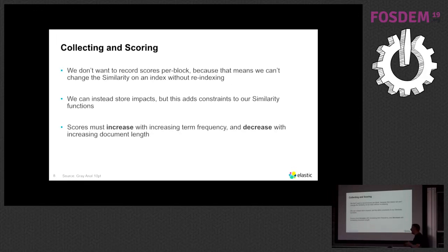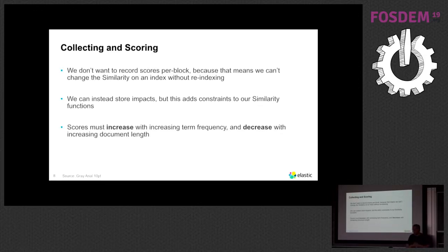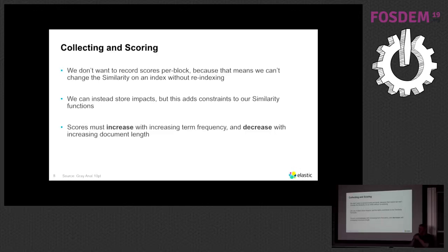This comes with a trade-off: we need the similarity to behave in a certain way when this pair of values changes. Our constraints are that if your term frequency increases, the score must increase — this is so that when you're calculating maximum scores for maximum term frequencies, those two correlate. And similarly, if the norm increases, then the score must decrease. Generally speaking, longer documents are less useful than shorter documents in terms of the contribution of an individual term's score. We make that an official constraint on the similarity. If you have a similarity that adheres to these two constraints, you can use this new block max functionality.